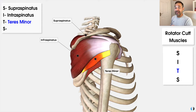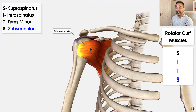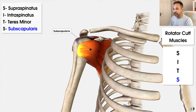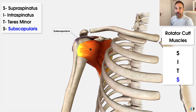Then we have the final S, which is for subscapularis. As you can see, this muscle is located on the anterior surface of the shoulder and is responsible for medial rotation of the glenohumeral joint.